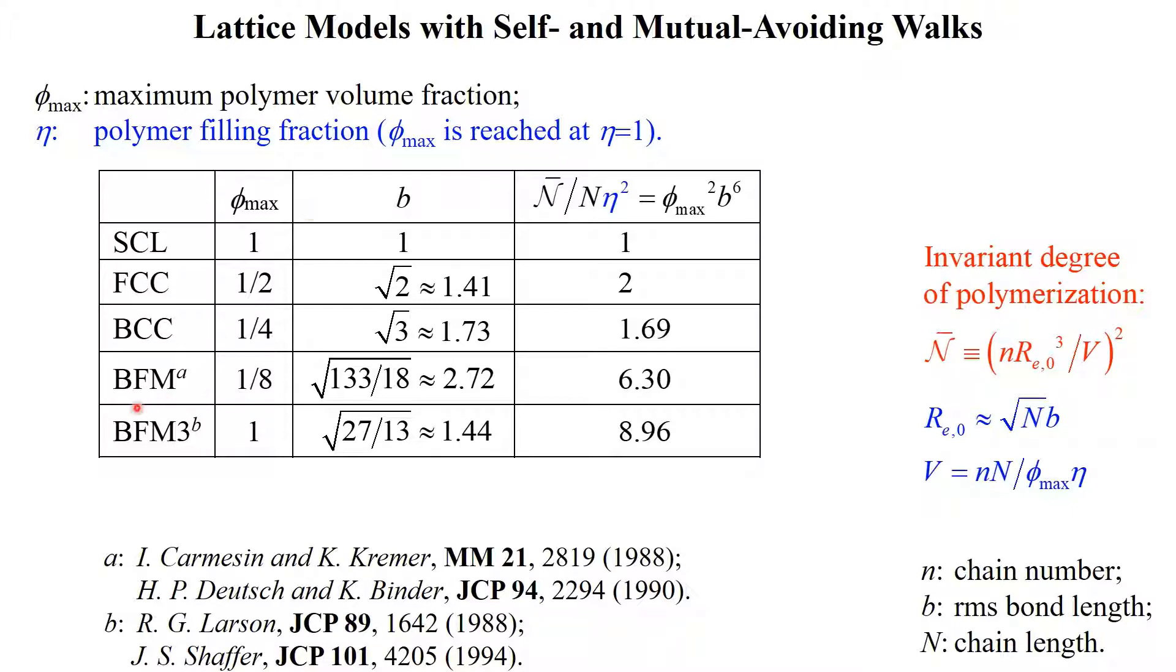For example, in the bond fluctuation model, phi-max is one-eighth and people typically use eta of one-half in simulations of polymer melts. Also, b here is the root mean square bond length of an ideal chain on the lattice in units of lattice spacing. We see that under this approximation, n-bar is proportional to the square of phi-max and b to the power of 6. It is precisely due to the latter that this number for the bond fluctuation model is much larger than that for the simple cubic lattice.